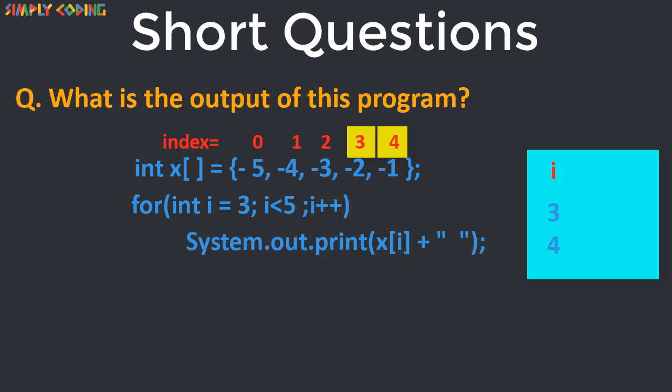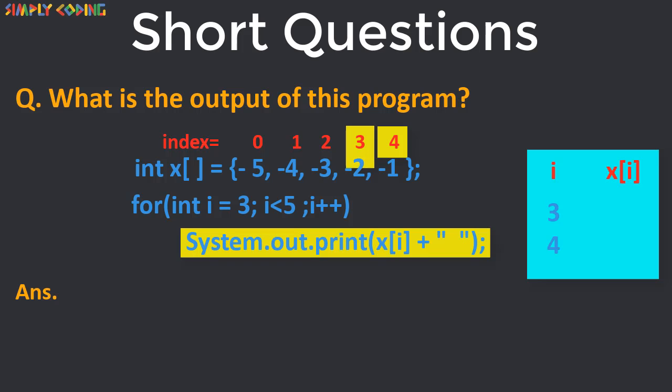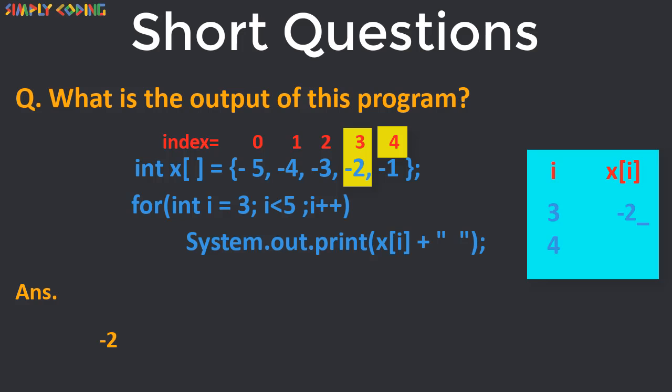Within the loop there is print statement. So it will print element at index 3 which is minus 2 first with space. And then in the next iteration of loop it will print element at index 4 which is minus 1 with space. This is the output of the program.